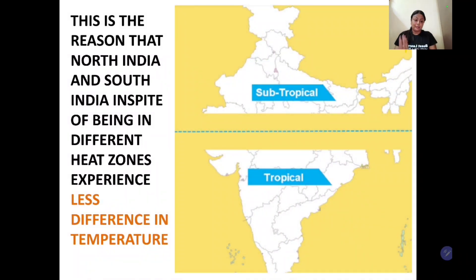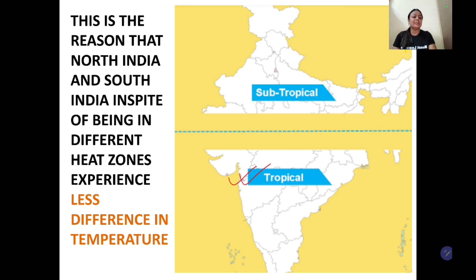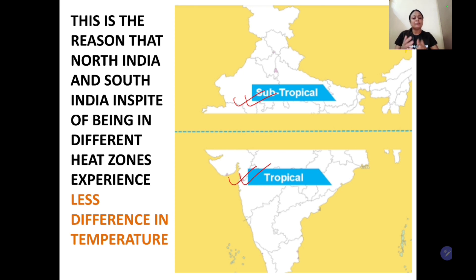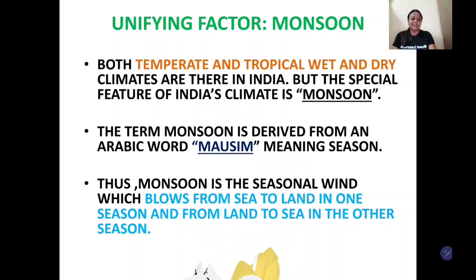Now, the concluding statement is that because of the oceanic influence, in spite of having tropical climate, South India ka temperature control mein rehta hai — na toh wo bahut zyada hota hai, na toh bahut kam. Jabki North India, because of being far from the sea, yahan ke temperature mein kaafi difference hota hai. So this is how north India and south India do not have much difference in temperature, in spite of being in two different heat zones.